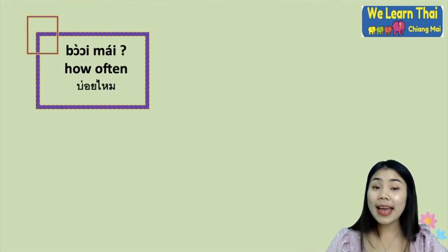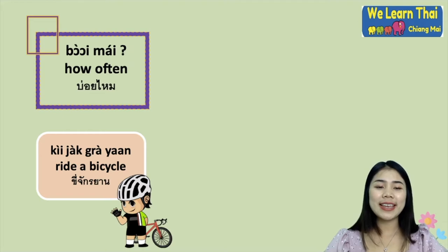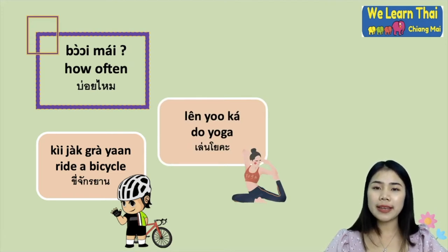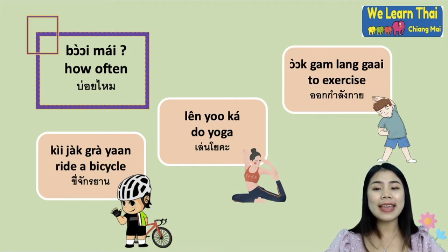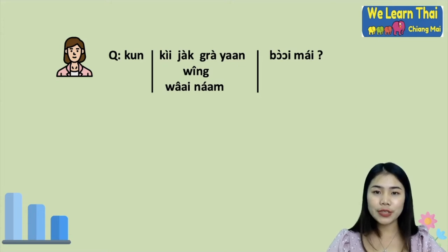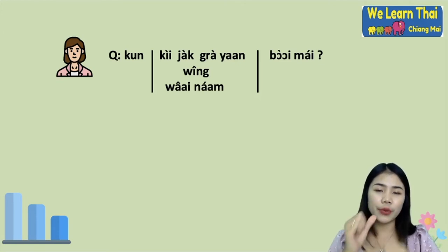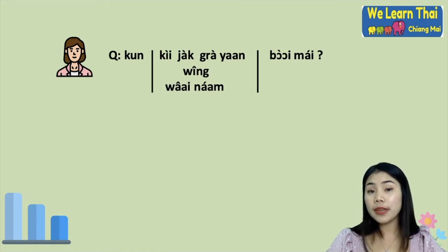If you like to do some activity, you can ask how often someone does that activity using the word 'bòi mài'. More activity vocabulary: 'kìi jak-grà-yaan' means ride a bicycle; 'lên yo-gâa' means do yoga; 'òok gam-lang gaai' means exercise. For the pattern: 'Kun kìi jak-grà-yaan bòi mài?' — how often do you ride a bicycle? 'Kun wing bòi mài?' — how often do you run? 'Kun wâi nám bòi mài?' — how often do you swim?